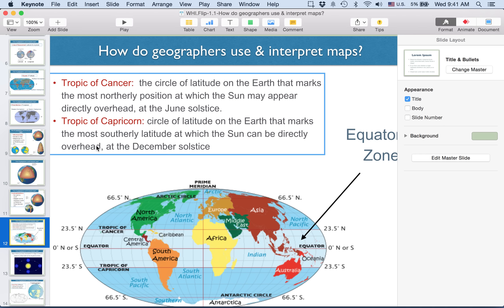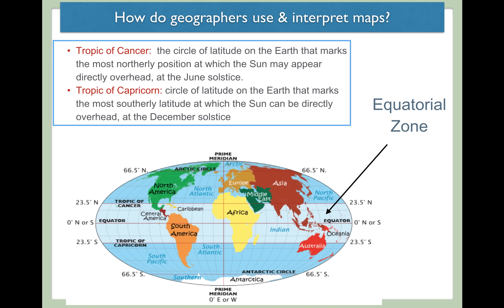Two other important lines of latitude that are helpful to know: one is called the Tropic of Cancer, the other is called the Tropic of Capricorn. The Tropic of Cancer is at 23.5 degrees north, and the Tropic of Capricorn is at 23.5 degrees south. The Tropic of Cancer is the circle of latitude that marks the most northerly point at which the Sun may appear directly overhead at the June solstice. The Tropic of Capricorn is the same concept — the southernmost latitude at which the Sun can be directly overhead at the December solstice. The solstices help us understand the orbit of the Earth around the Sun and the angle at which the Earth receives sunlight.